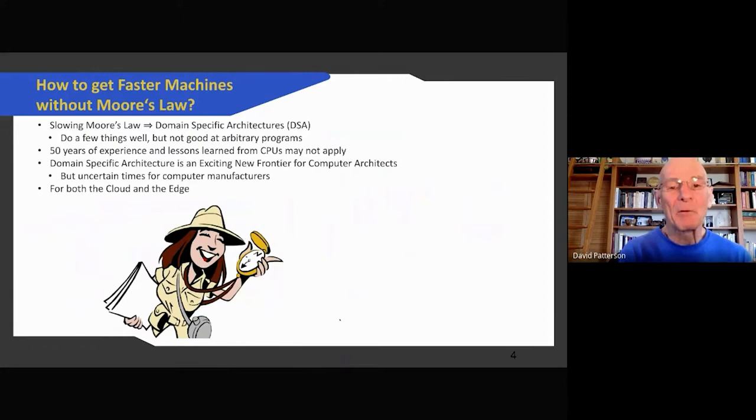So we need faster machines. How are we going to do that without the help of Moore's Law? Computer architects think the only way we can do this is domain-specific architectures, DSAs. They don't try to do everything but just do a few things exceptionally well. What this means for computer architects is five decades of experience of designing general-purpose processors may not apply. So if you're a researcher, this is exciting new times, new innovation, brand new ways to design computers. But if you're at a company trying to sell products, it's a very scary time because which thing should you build?